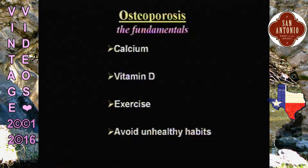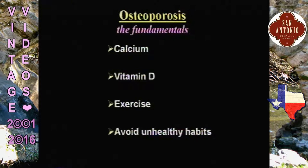This segues into the fundamentals for prevention and treatment of osteoporosis: adequate calcium, vitamin D, exercise, and avoiding risk factors — and this is not just at the time of menopause, but throughout one's life. It's concerning for adolescents these days to be drinking colas and not drinking their milk. Milk provides not only calcium but protein and phosphorus, all very important in bone metabolism.